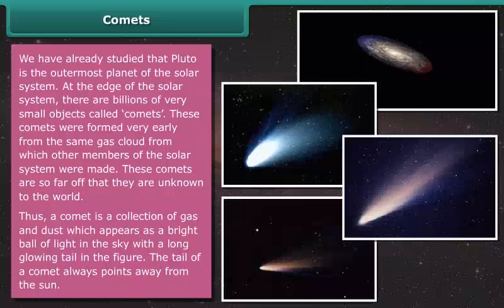Thus, a comet is a collection of gas and dust which appears as a bright ball of light in the sky with a long glowing tail in the figure. The tail of a comet always points away from the sun.